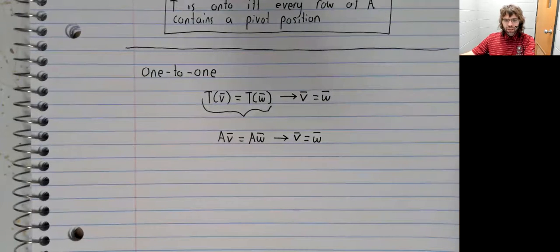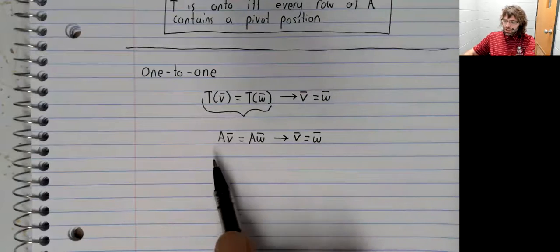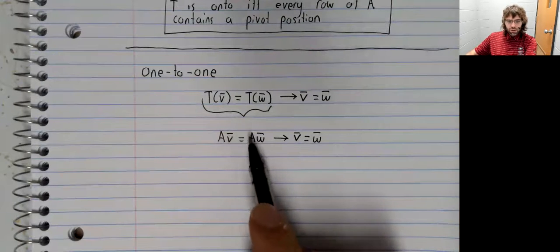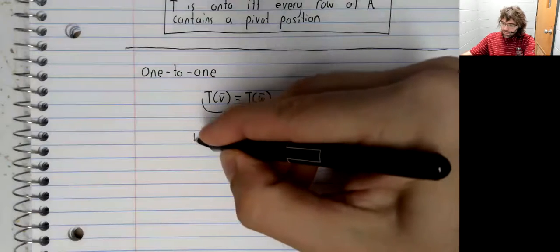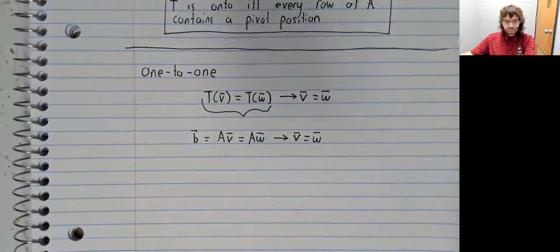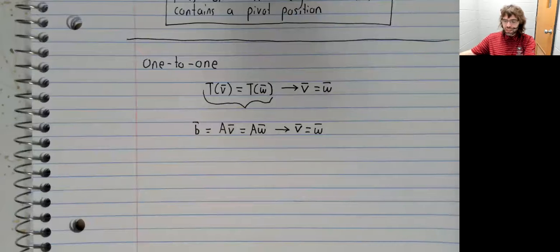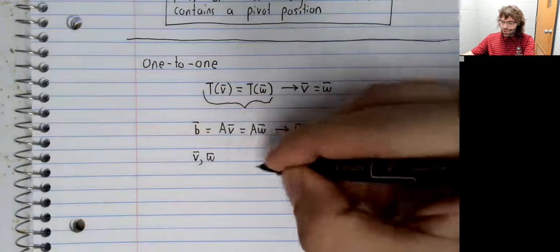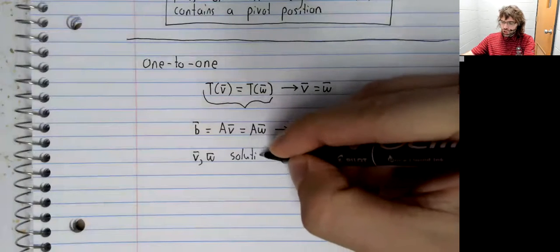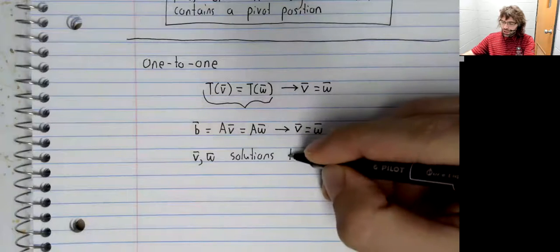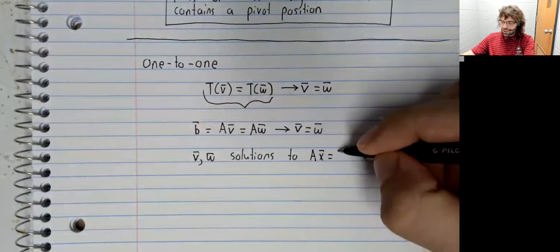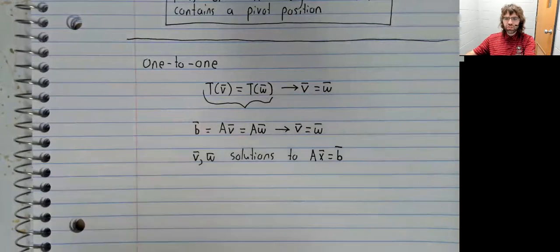When is this true? Well, let's suppose that AV equals AW. Let's give this vector a name. Let's call it B. V and W are solutions to the matrix equation AX equals B.